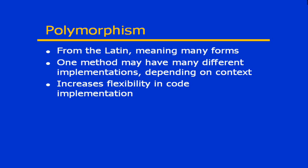Polymorphism, based on its Latin root, basically means many forms or many shapes. This stands to reason because the idea is that what appears to be a single method or a single member may actually have multiple different implementations, depending entirely on the context of how that particular member is called.